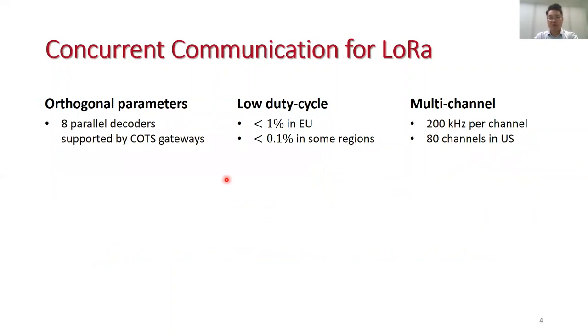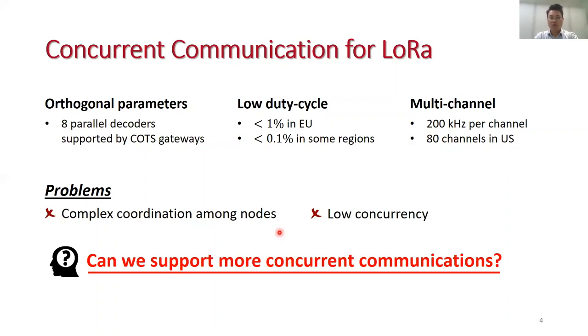LoRa supports concurrent communications using a set of orthogonal parameters. For instance, a commodity gateway can support a maximum of eight packets communicating in parallel. LoRa also uses a low duty cycle and multiple channels to support a large number of IoT connections. However, it requires complex coordination among IoT sensors, and the maximum concurrency is still much lower than the number of IoT sensors. So in this research, we ask, can we support more concurrent communications for LoRa?